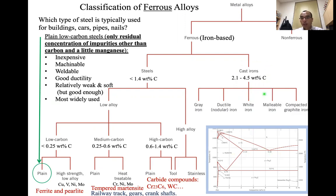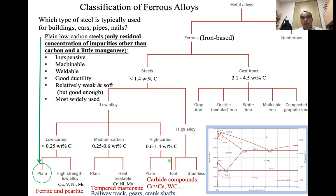Today we will discuss more about cast iron. In reality, the carbon concentration is generally between 3.5 and 4.5 percent. For steel, last time we discussed low alloy and high alloy. For low alloy, we have three categories: low carbon steel with carbon less than 0.25 percent, medium carbon between 0.25 and 0.6 weight percent, and high carbon between 0.6 and 1.48 percent. From low to high carbon, you have more impurity atoms, so tensile strength and hardness increase but ductility gets worse.